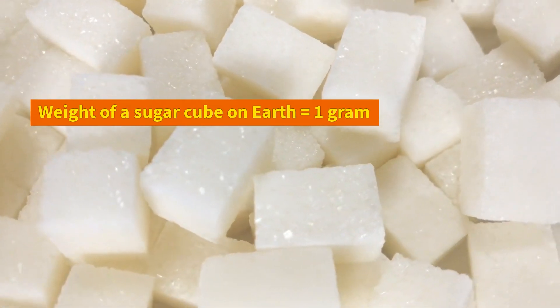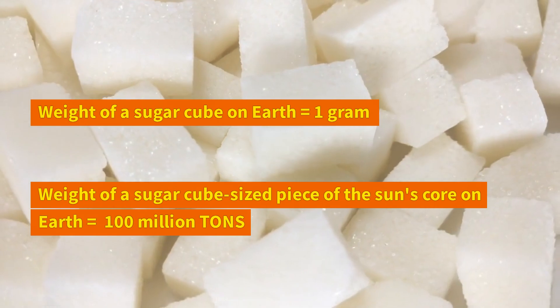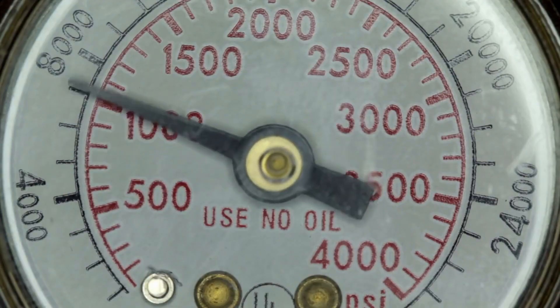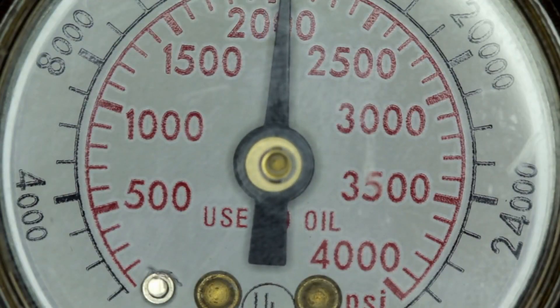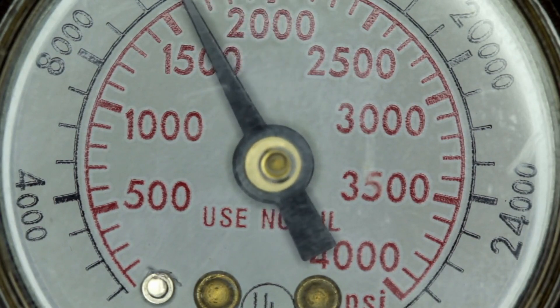To visualize this, a chunk the size of a sugar cube would weigh around 100 million tons on Earth. Additionally, the pressure at the center of the core is estimated to be an incredible 340 billion times the air pressure at sea level on Earth.